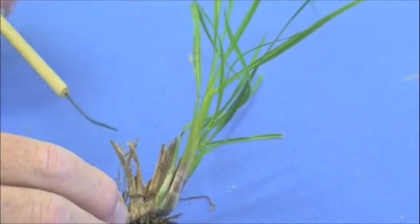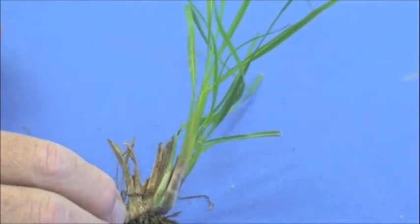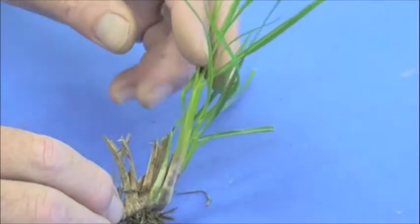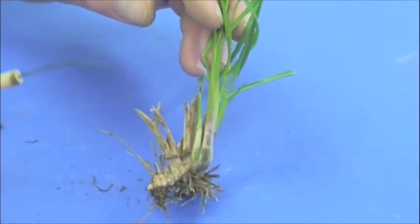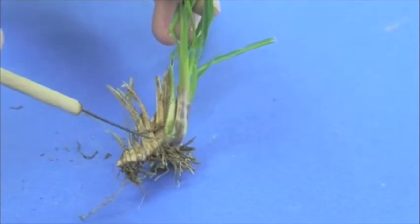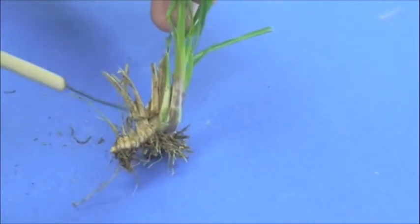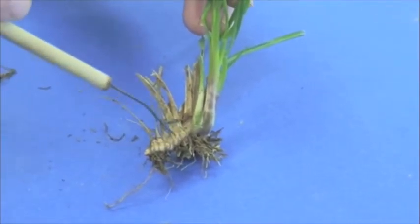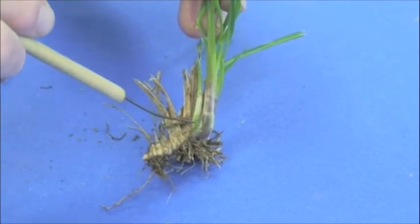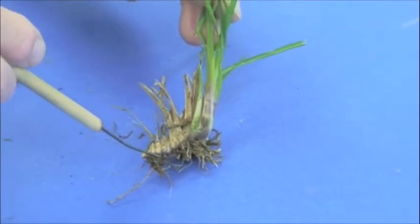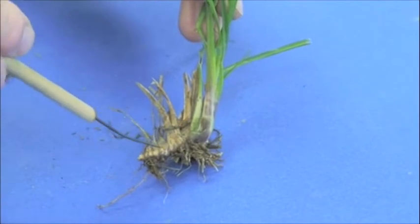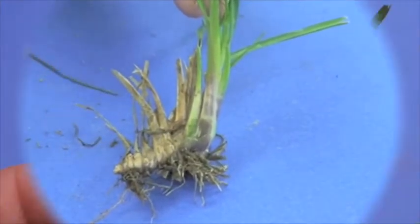Probably the other thing that you'll hear about bahiagrass is the presence of a lot of heavy rhizomes and thick rhizomes. In fact, they're so thick that they almost appear to be on the surface to almost look like a stolon, but that's another thing, to me, that's very characteristic of bahiagrass, are these really thick rhizome type growth that the plant will have.